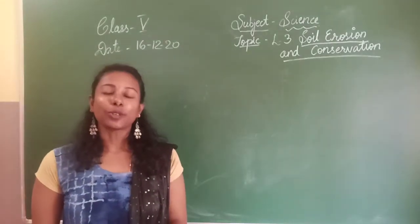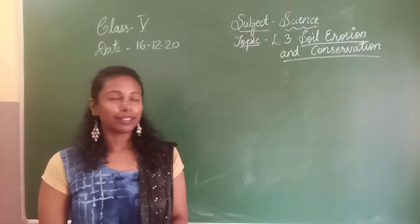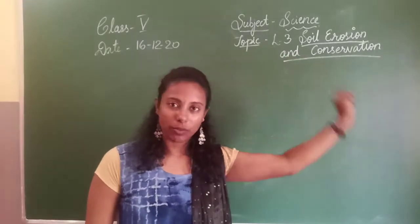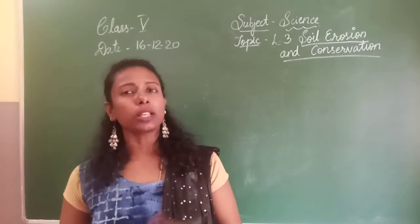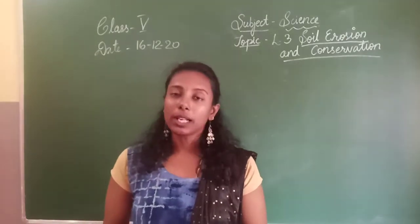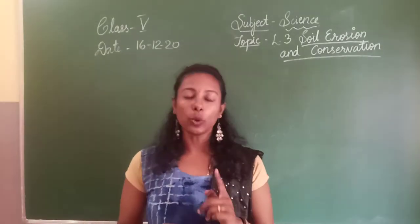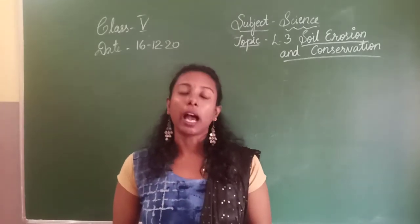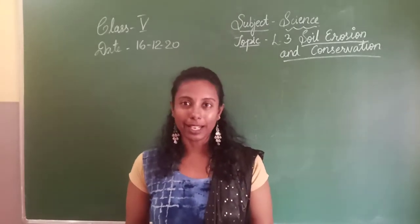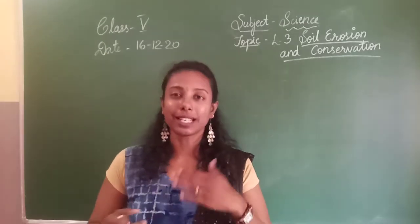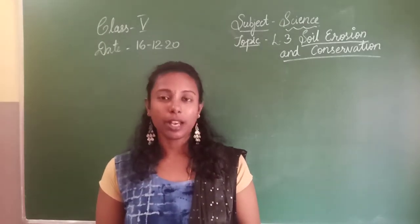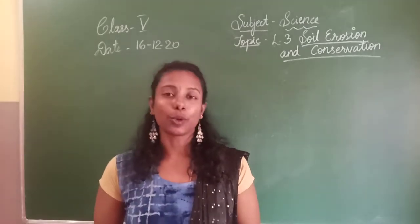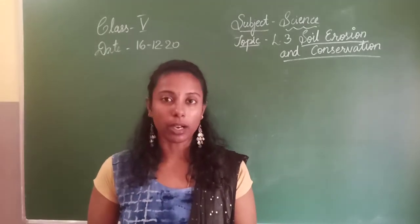Hello children, today let us start with a new chapter, that is lesson number 3: soil erosion and conservation. So children, what is soil? Soil is a naturally occurring loose covering of the broken rocky material and decaying organic matter present on the surface of the earth. It occurs naturally — soil is a gift from nature.